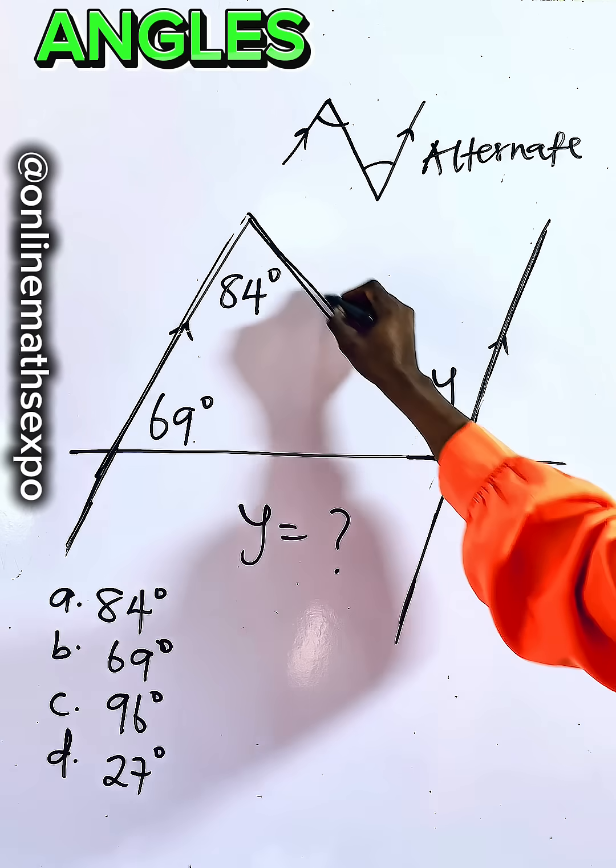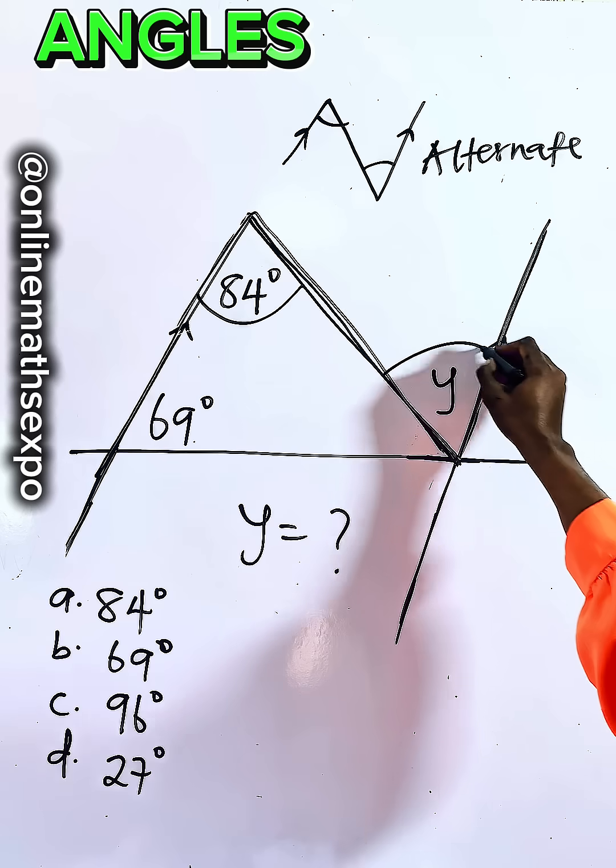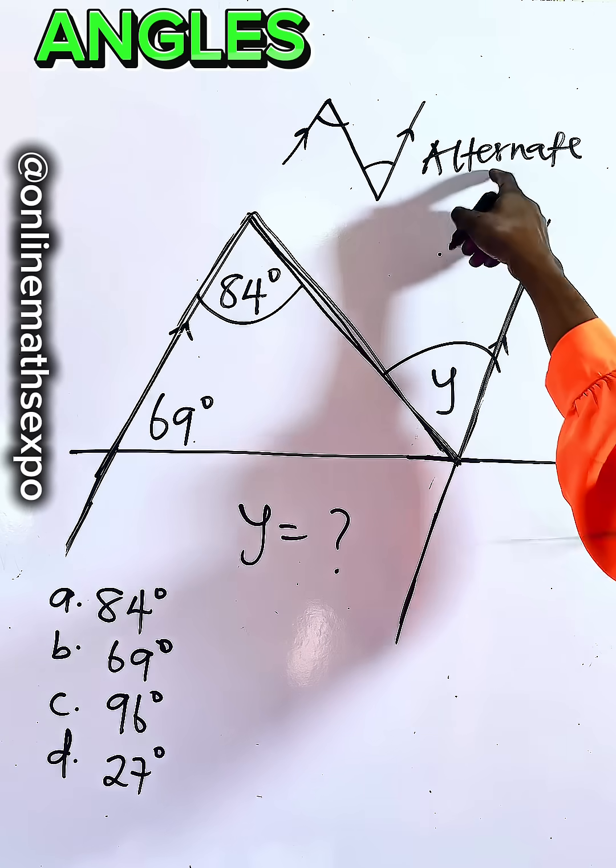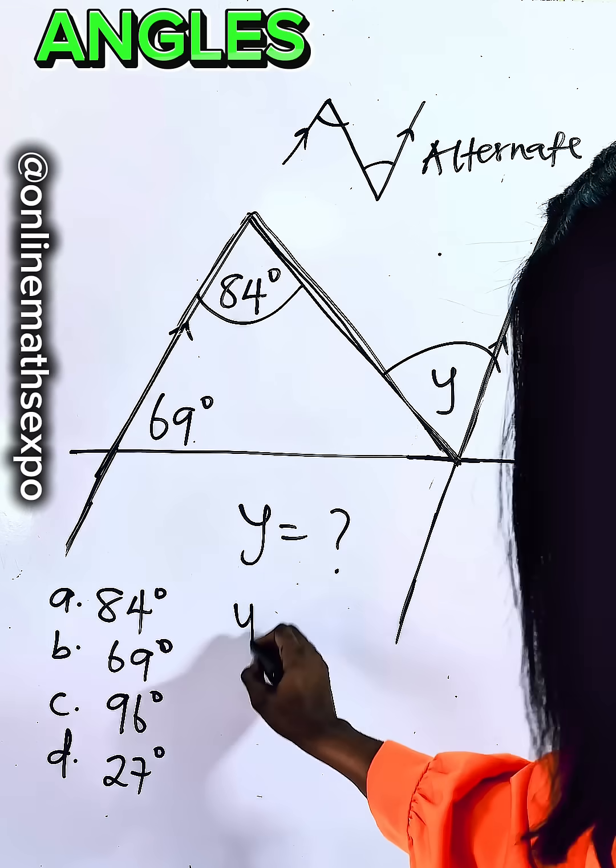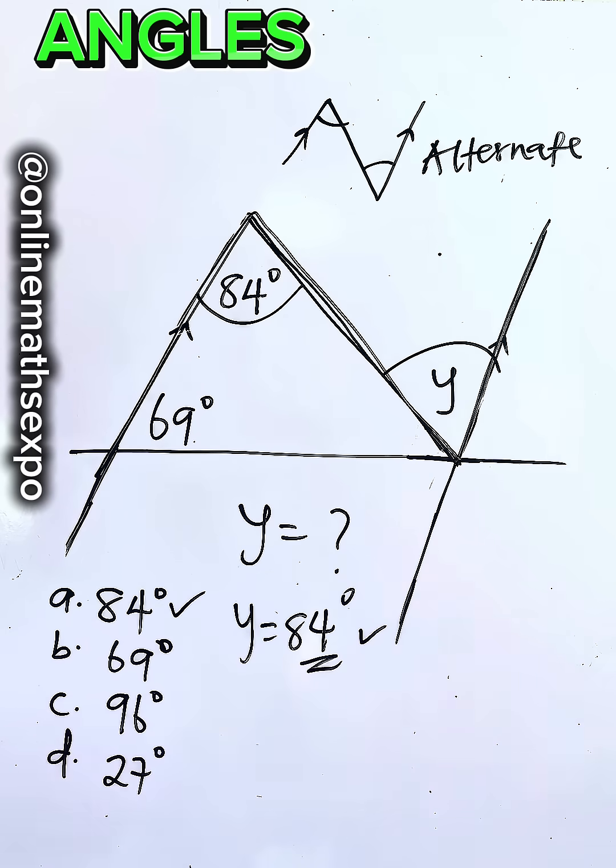If you form a Z shape, it means that this angle here must be equal with angle Y. In that case, to find Y, they are the same because they are alternate. So angle Y is 84 degrees, and that is option A.